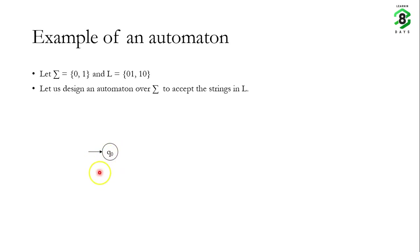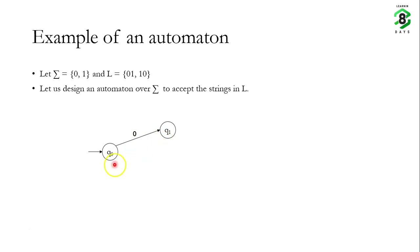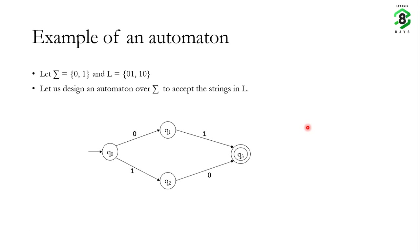We call this initial state Q0. From the initial state, if a 0 input is given to the machine, it goes to state Q1 — it is as if the machine remembers that it has received a 0. From initial state Q0, if an input 1 is given, the machine goes to state Q2. From Q1, if a 1 input is given, the machine goes to Q3. And from Q2, if a 0 input is given, the machine also goes to Q3.